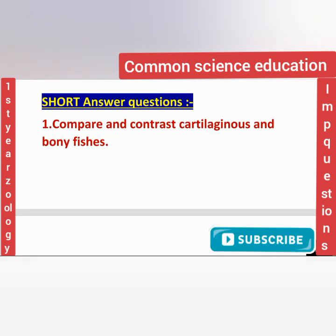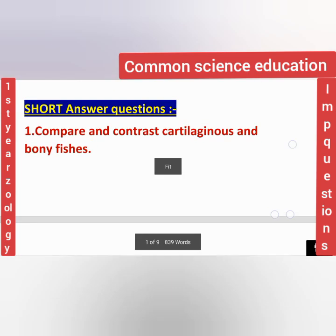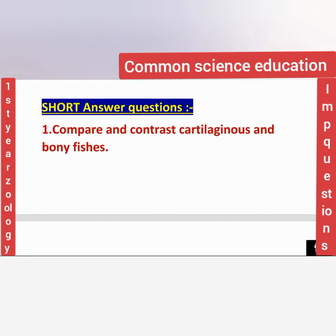For the short answers blueprint, Animal Diversity 2 and Locomotion are the two lessons that will give you four questions easily. From Animal Diversity 2, two questions will come, and from Locomotion and Reproduction, two questions will come. If you study these lessons for short answers, you will get four questions that you can easily attempt.